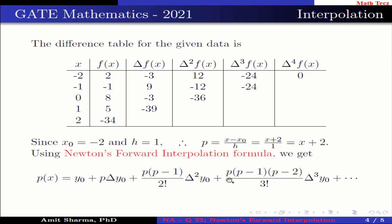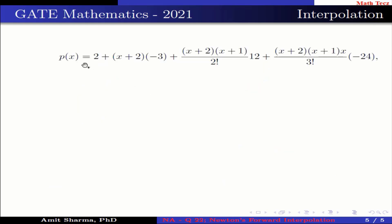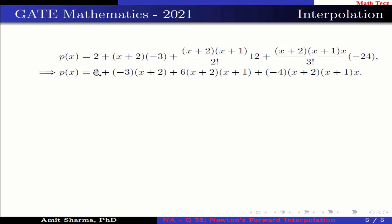Substituting all these values, P(x) = 2 + (x+2)(-3) + (x+2)(x+1)/2! · 12 + (x+2)(x+1)(x)/3! · (-24), which simplifies to P(x) = 2 - 3(x+2) + 6(x+2)(x+1) - 4(x+2)(x+1)(x).